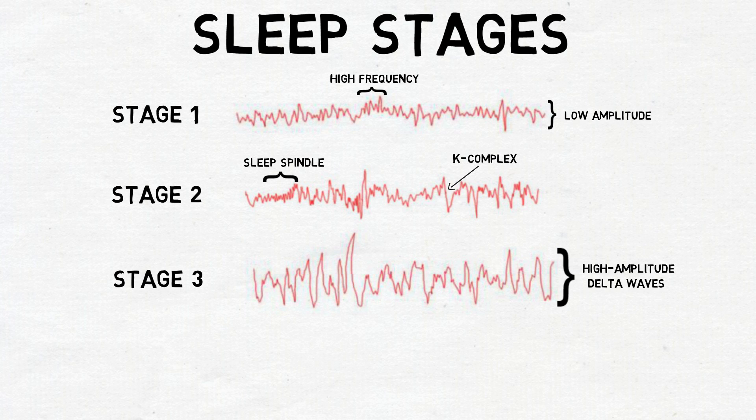Next, the sleeper passes rapidly back through stage 2 and stage 1 before entering rapid eye movement, or REM sleep. In REM sleep, EEG activity resembles what's seen in stage 1, or restful waking.